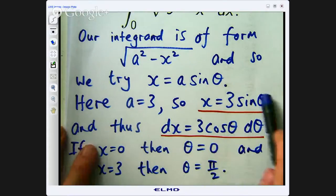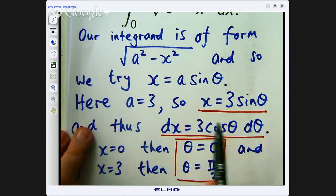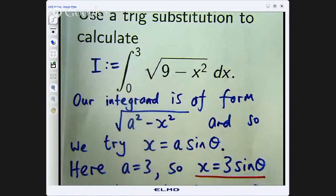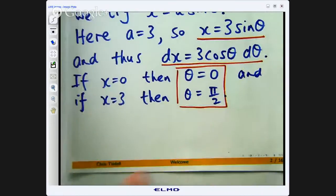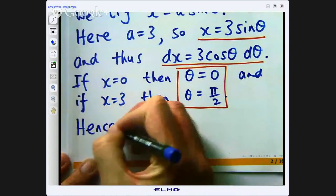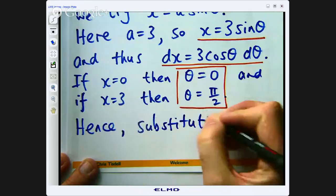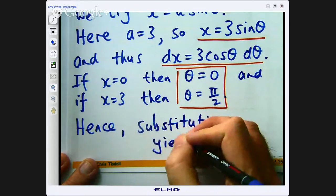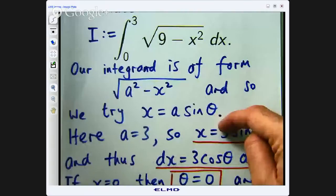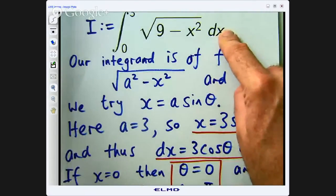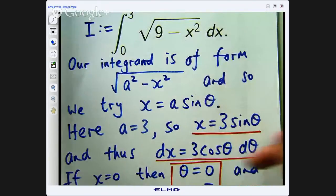So let us take this and we will sub them back into I. Hence substitution yields the following. We are going to have 9 minus 3 squared sine squared theta this is going to be replaced with 3 cosine theta d theta this is going to go to 0 and this is going to go to pi on 2.